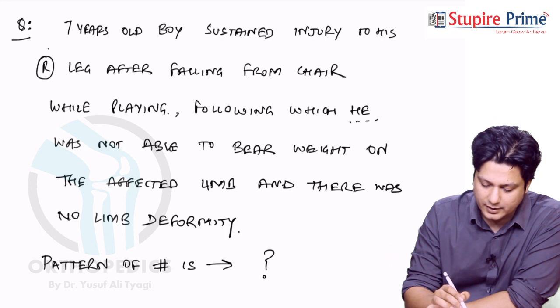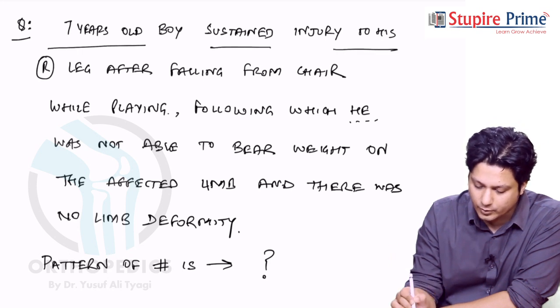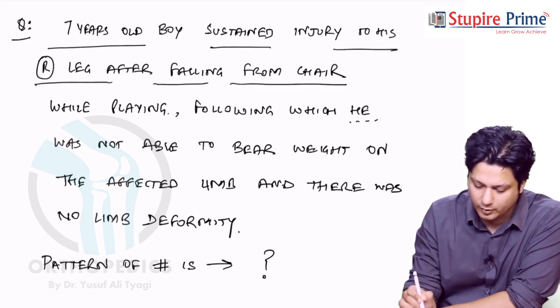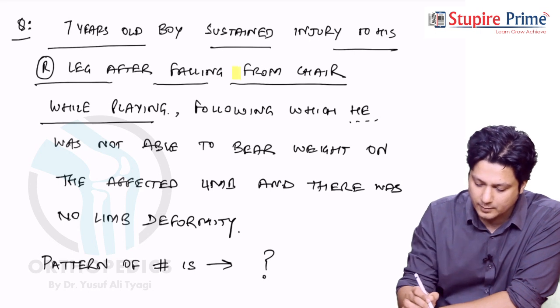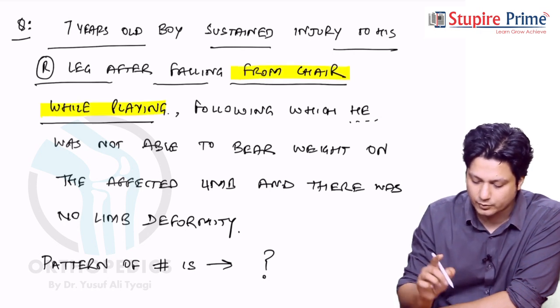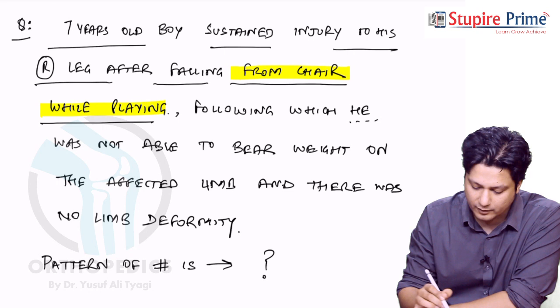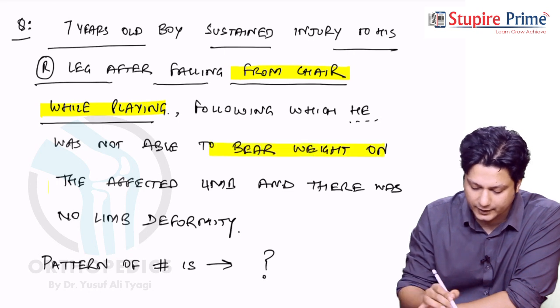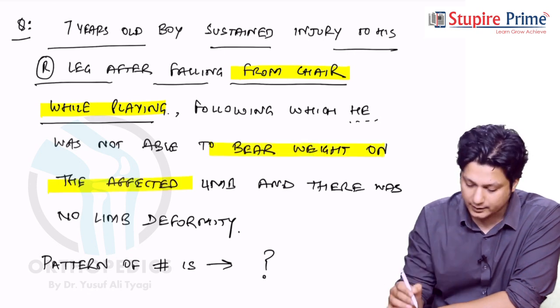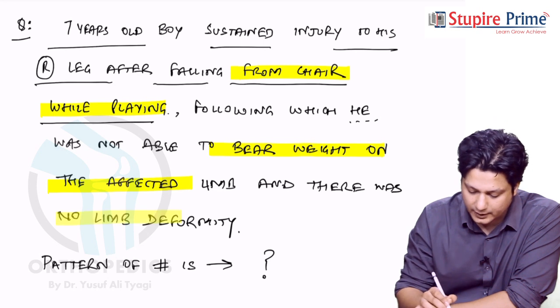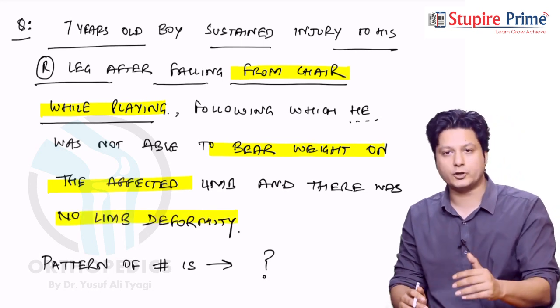If you read the question: a 7-year-old boy sustained injury to his right leg after falling from chair while playing. So one, the mechanism of injury is provided to you. Following which he was not able to bear weight on the affected limb, that means a significant trauma resulting in fracture. And there was no limb deformity - that is the third hint which is provided to you.